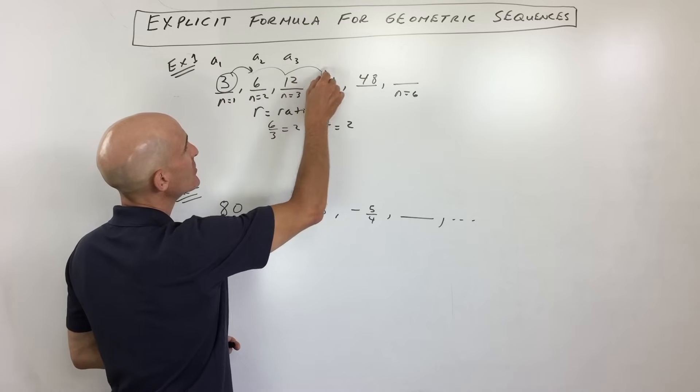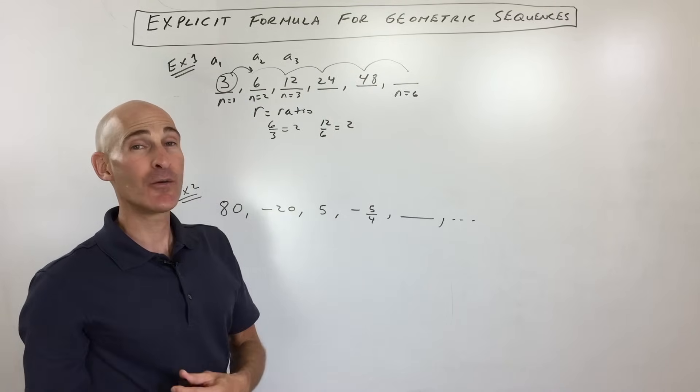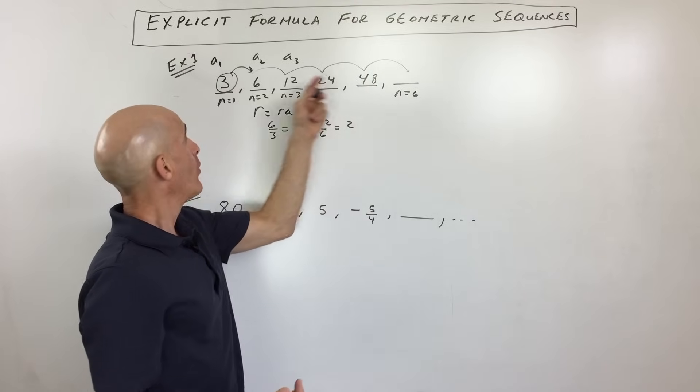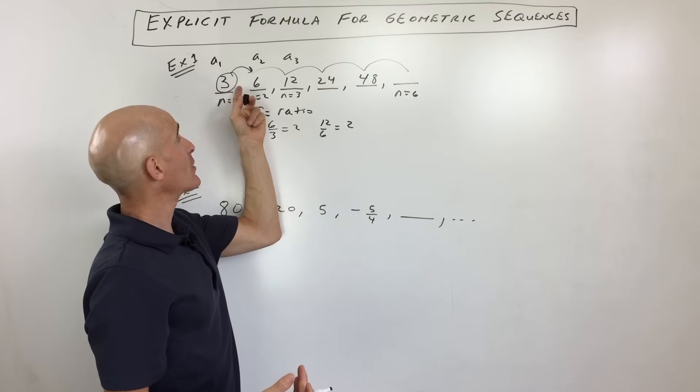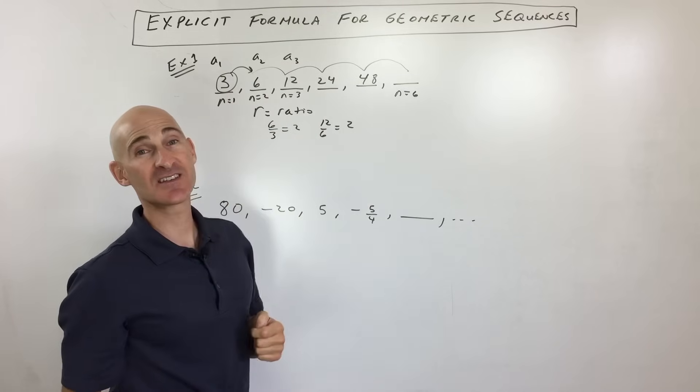Once, twice, 3 times, 4 times, 5 times. Now, you might be saying to yourself, Mario, how come 5? This is the sixth term. Well, because we already are on that first term, we already know this first term, we're just multiplying by the ratio one less time to get to the sixth term.